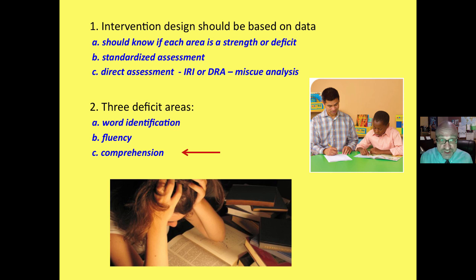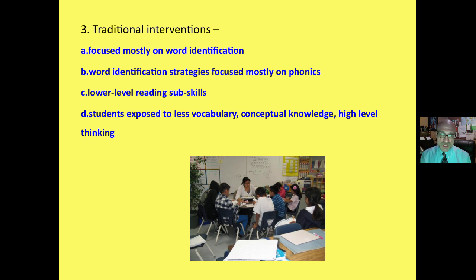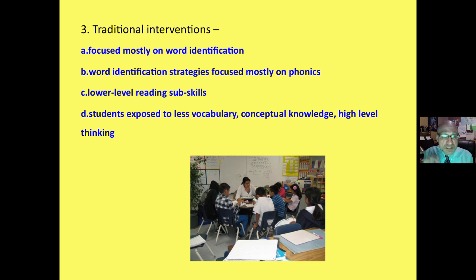There are three deficit areas in reading: word identification, fluency, and comprehension. This focuses just on comprehension. With traditional reading interventions, the focus was mostly on word identification, and word identification strategies focused mostly on phonics. You ended up with a lot of lower-level reading sub-skills.